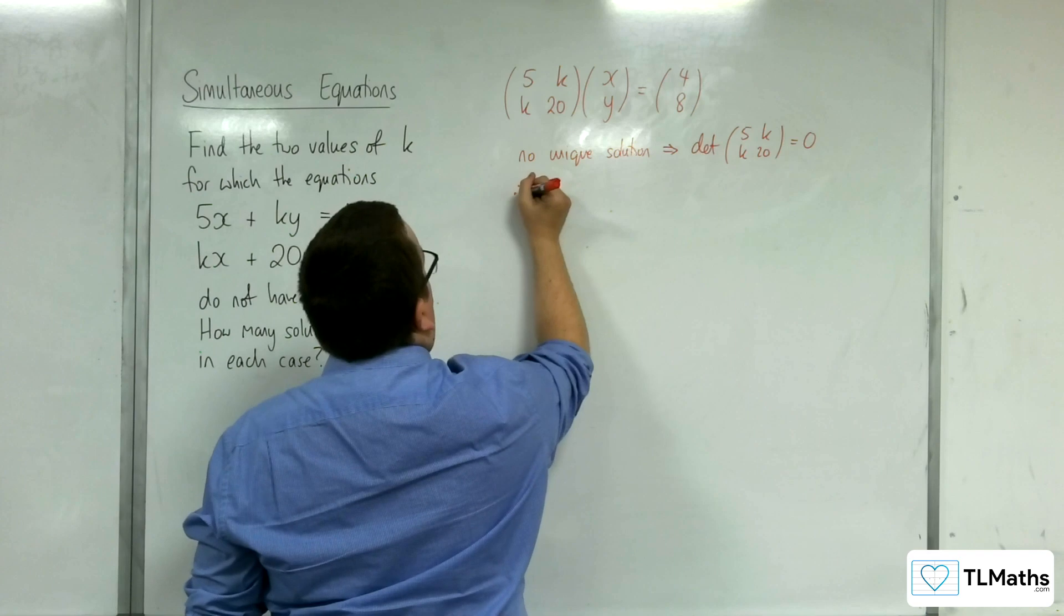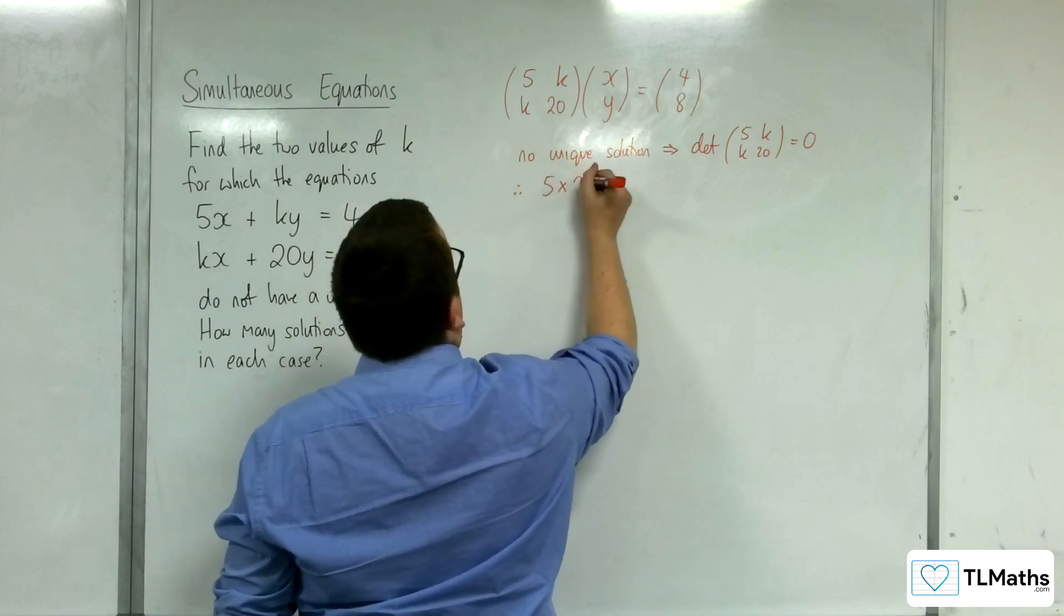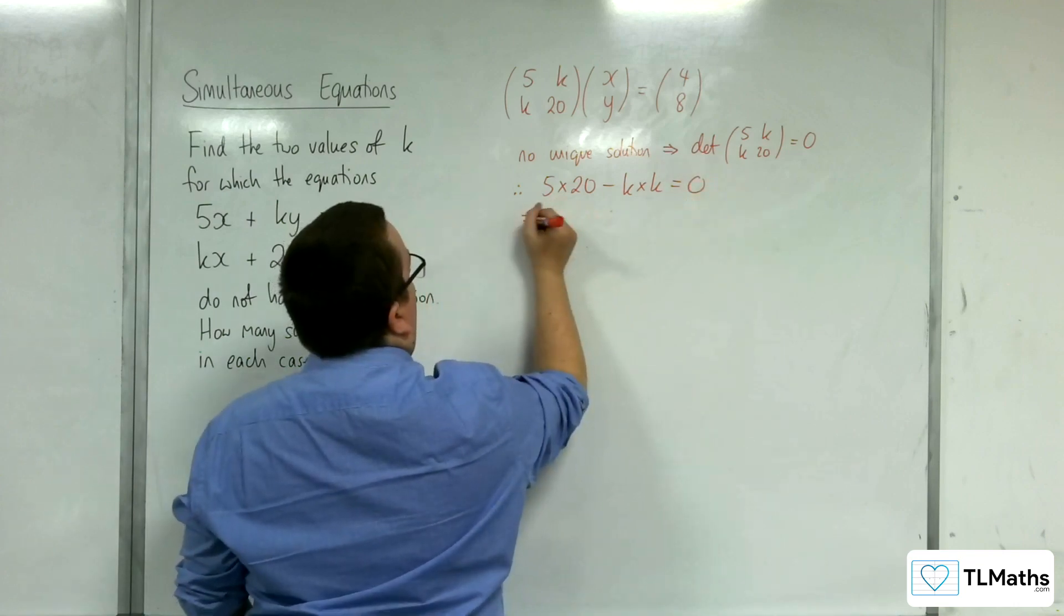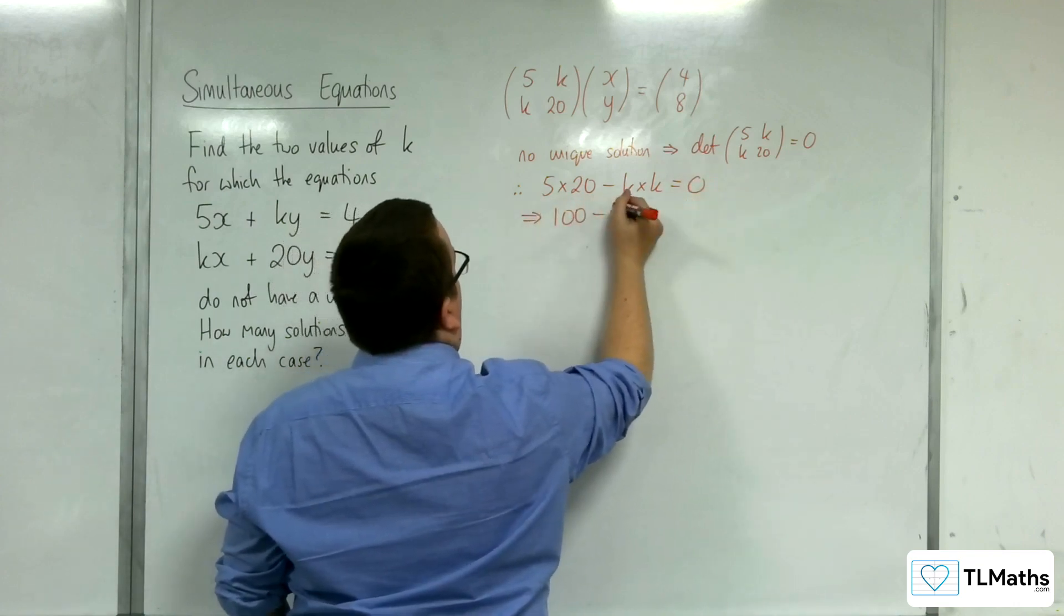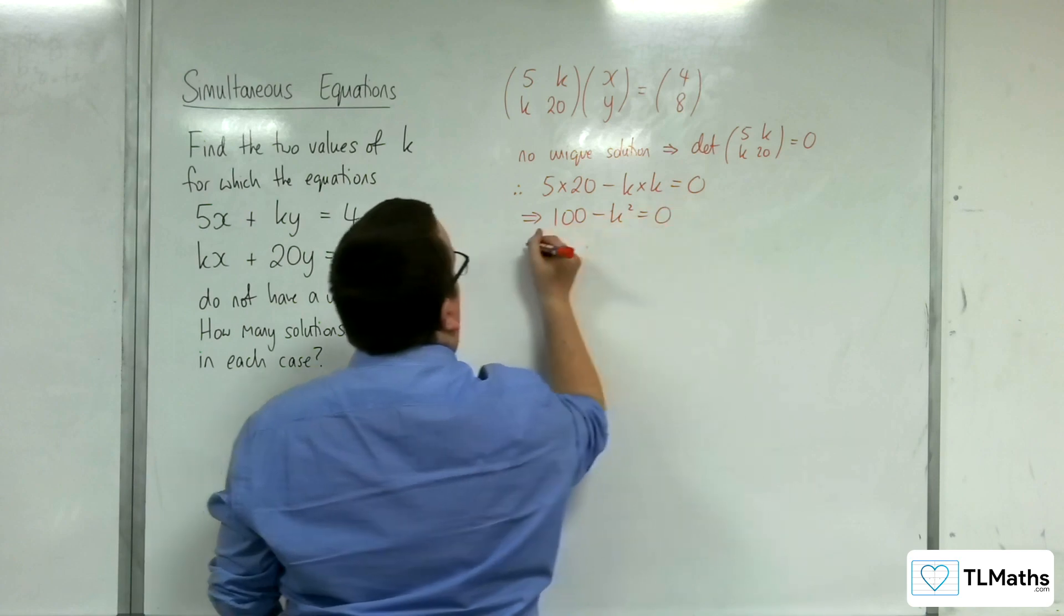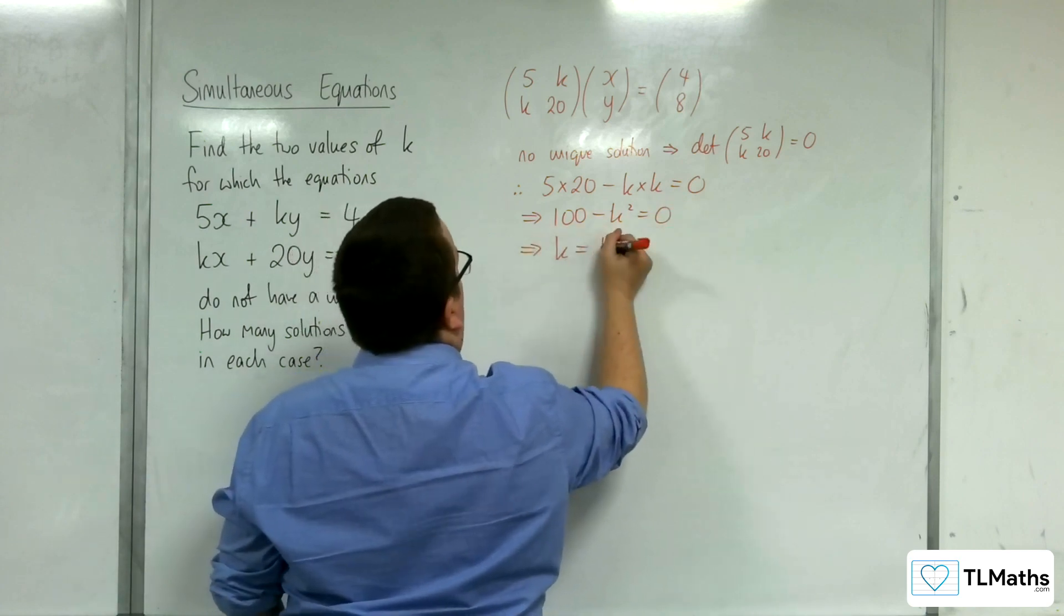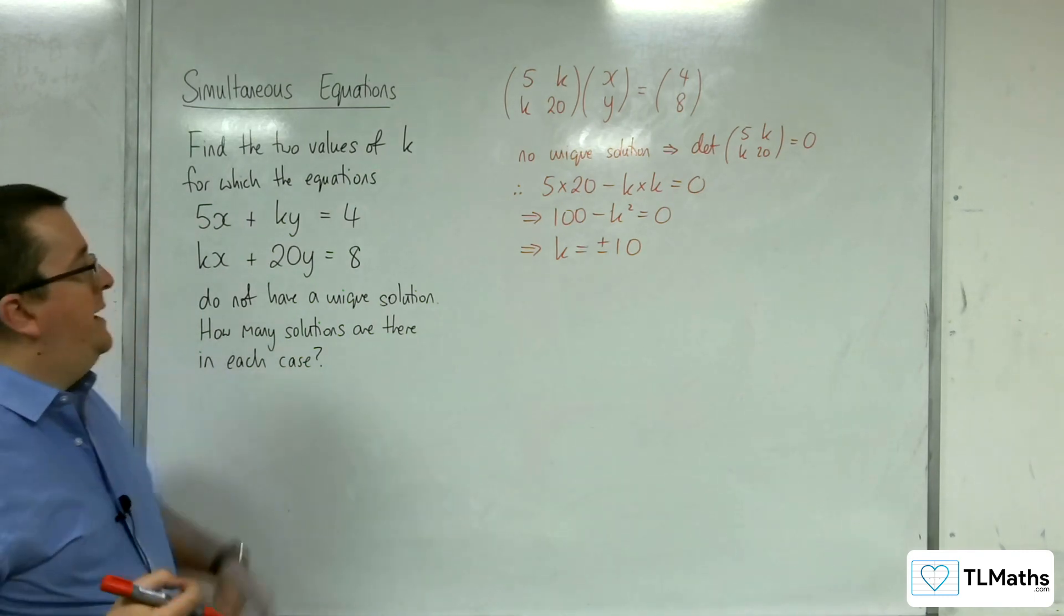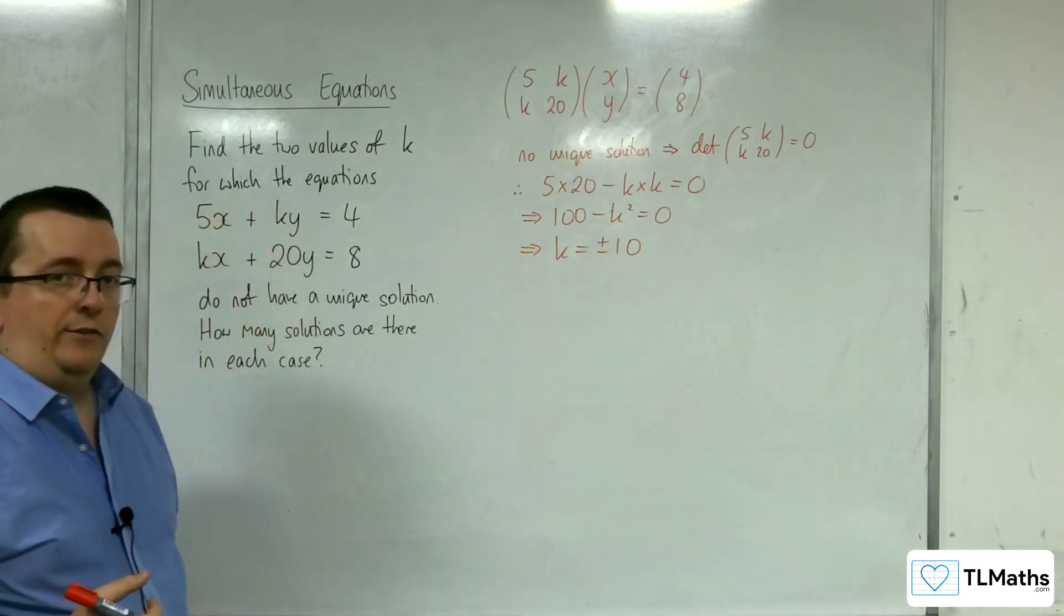So therefore, 5 times 20 take away k times k must be 0. So 100 take k squared is 0. So k would have to be plus or minus 10. So we found the two values of k that would make these equations not have a unique solution.